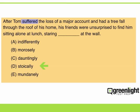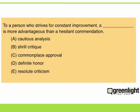Now it's important to mention that the missing information in a text completion question is not necessarily limited to a single word. We may have to select an entire phrase. Here's an example. In this example, both words must be well supported by the sentence. Someone who strives for improvement might want critique, but would he want a shrill critique? There's no evidence in the sentence that he would.